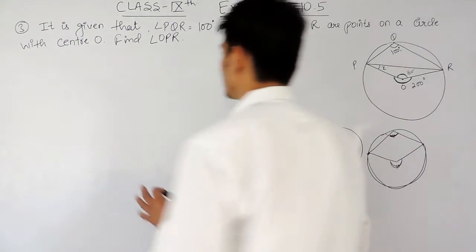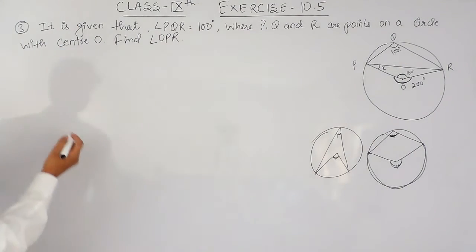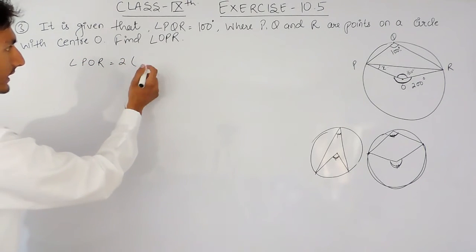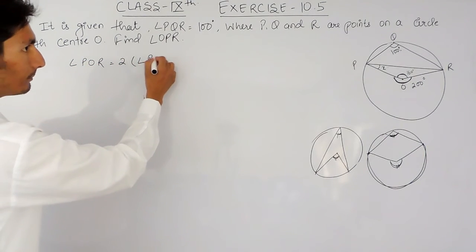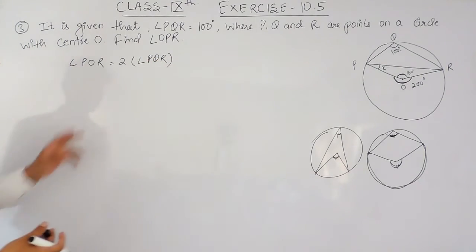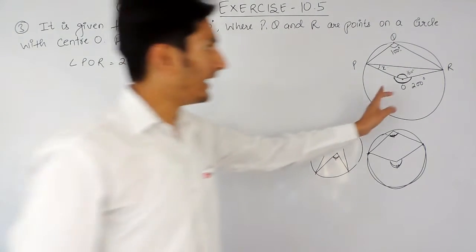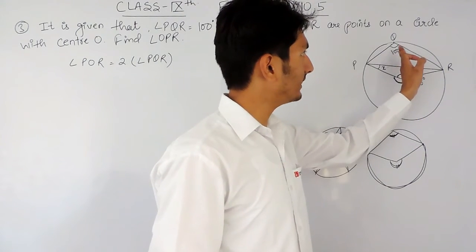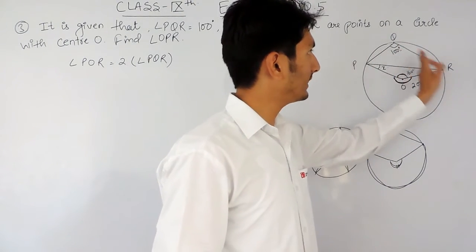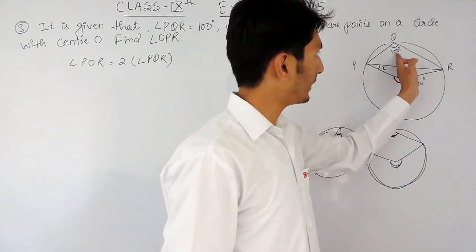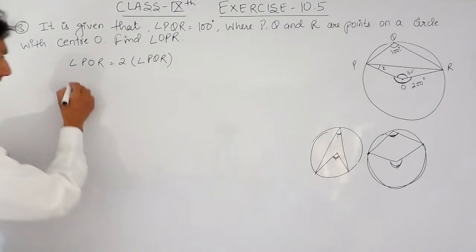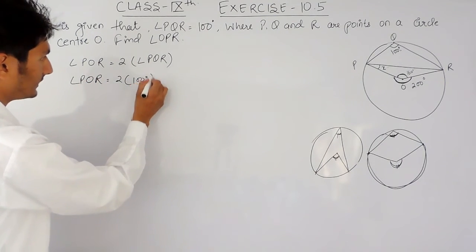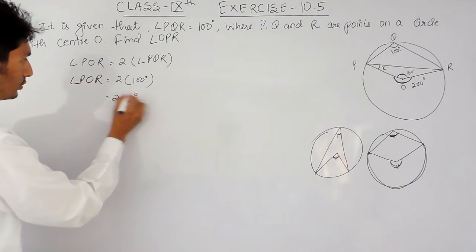Let's write this down: angle POR is equal to twice of angle PQR. The angle subtended at the center by an arc is double the angle subtended by it on the remaining part of the circle. So angle POR will be equal to twice of 100 degrees, that is equal to 200 degrees.